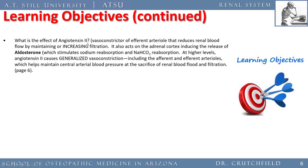Angiotensin II is a vasoconstrictor of the efferent arteriole — it reduces renal blood flow while maintaining or increasing filtration. By pinching off the efferent arteriole, the pressure head upstream increases, boosting filtration through the glomerulus. Angiotensin II also acts on the adrenal cortex to cause release of aldosterone, which stimulates sodium reabsorption and sodium bicarb reabsorption. At higher levels, angiotensin II causes generalized vasoconstriction, including constriction of both afferent and efferent arterioles, which maintains blood pressure at the expense of renal blood flow.